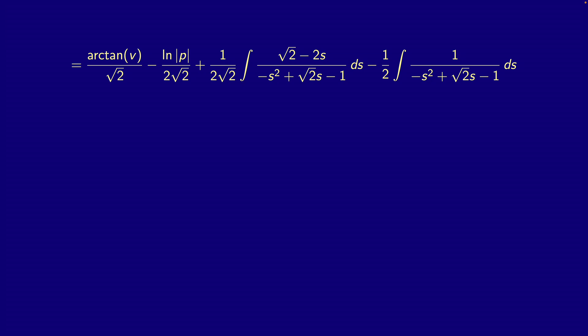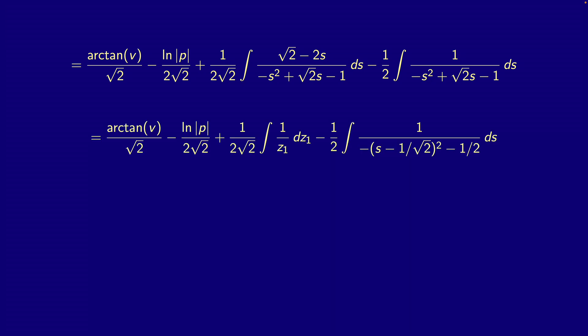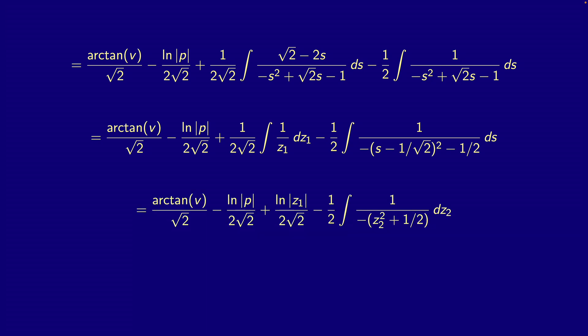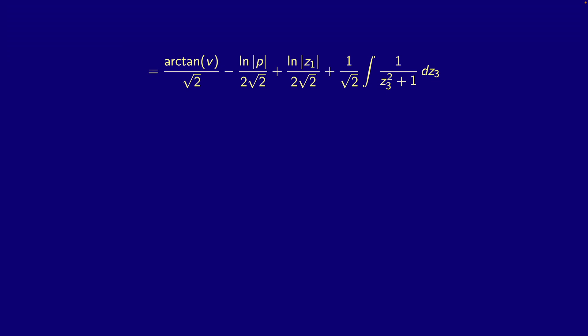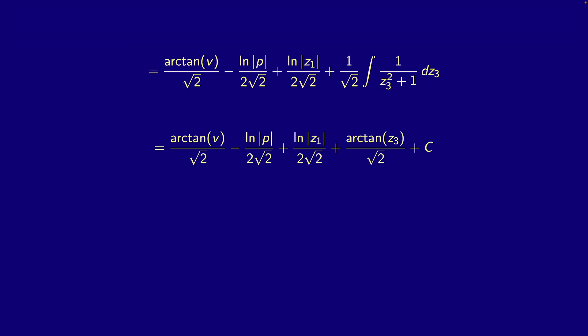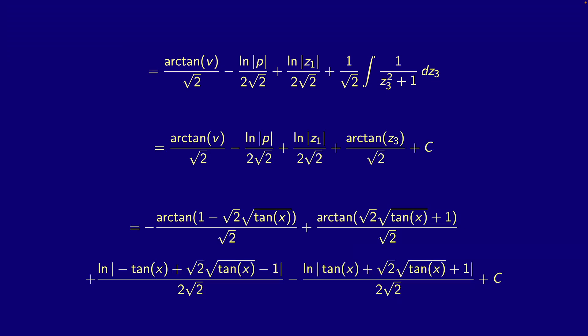Now we do the same sort of thing on the other side, going faster. We let z₁ be the denominator of that middle term, so we get one over z₁, and the middle integral becomes ln(z₁). For the rightmost term, we substitute z₂ for s minus one over √2, simplify by taking out one half, then let z₃ be √2·z₂, which gives us arctan. Unwinding everything finally gives us this enormous result, and we're done.